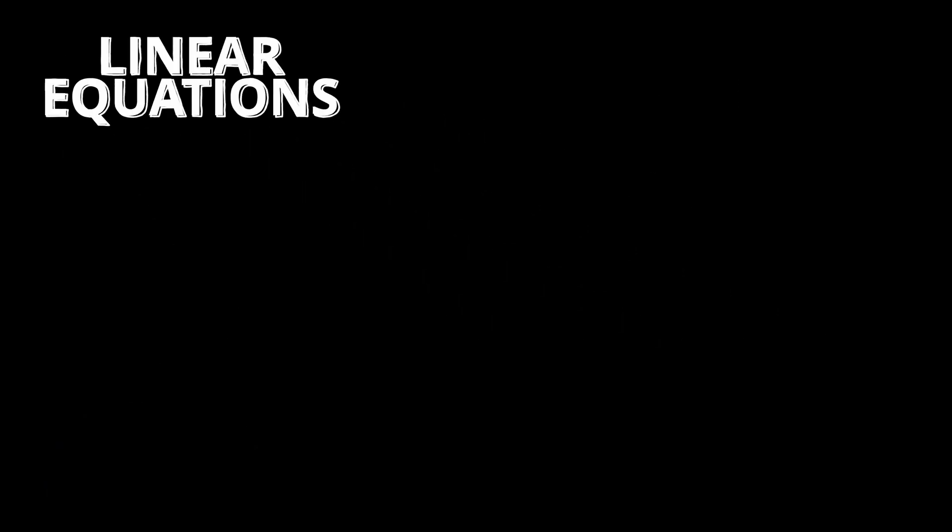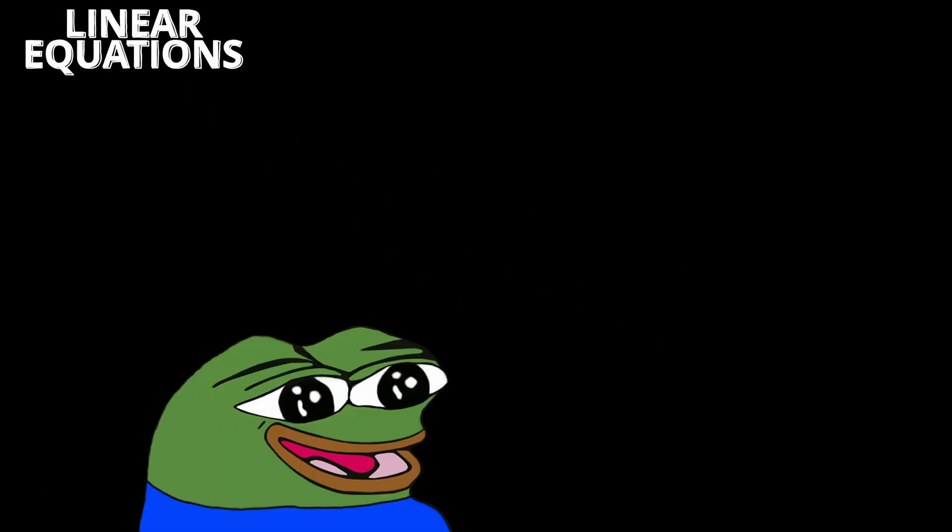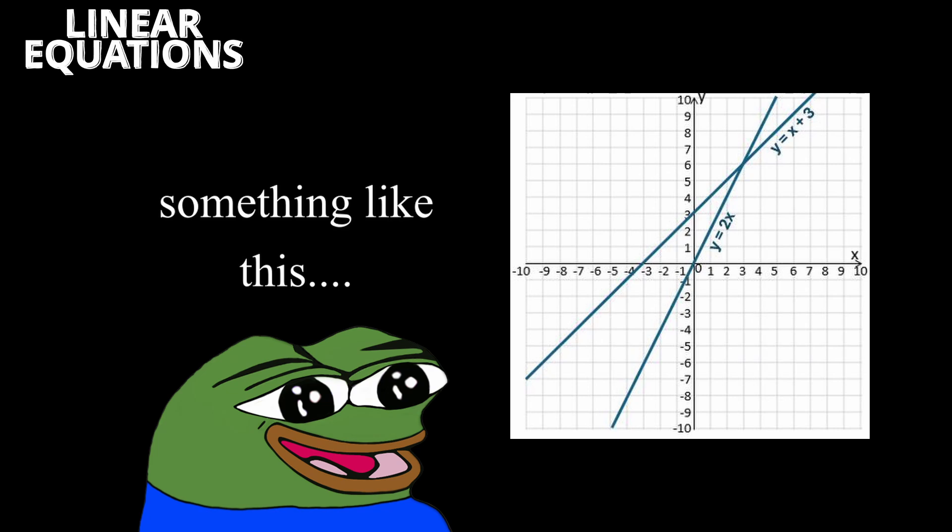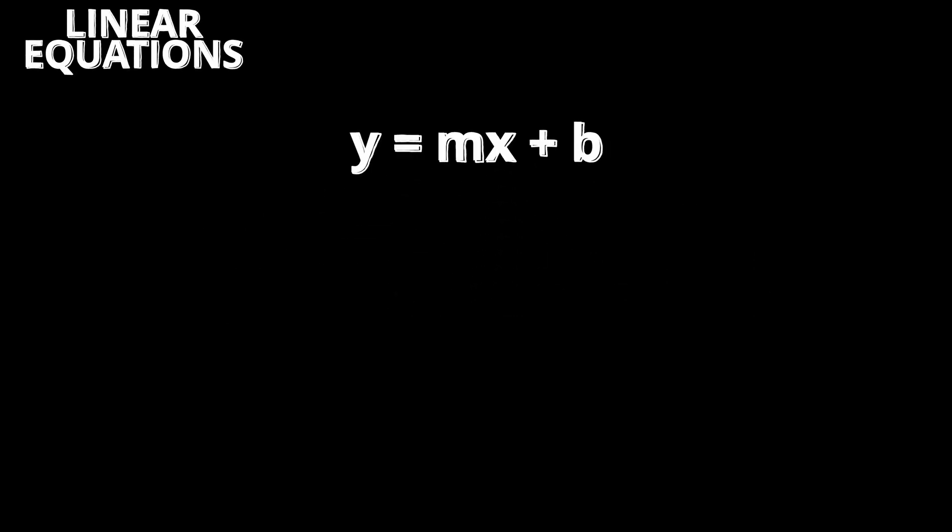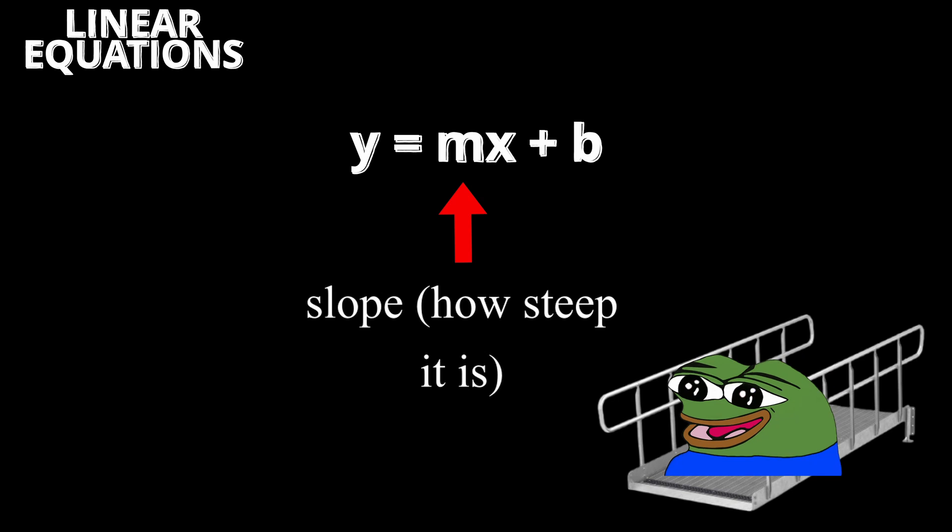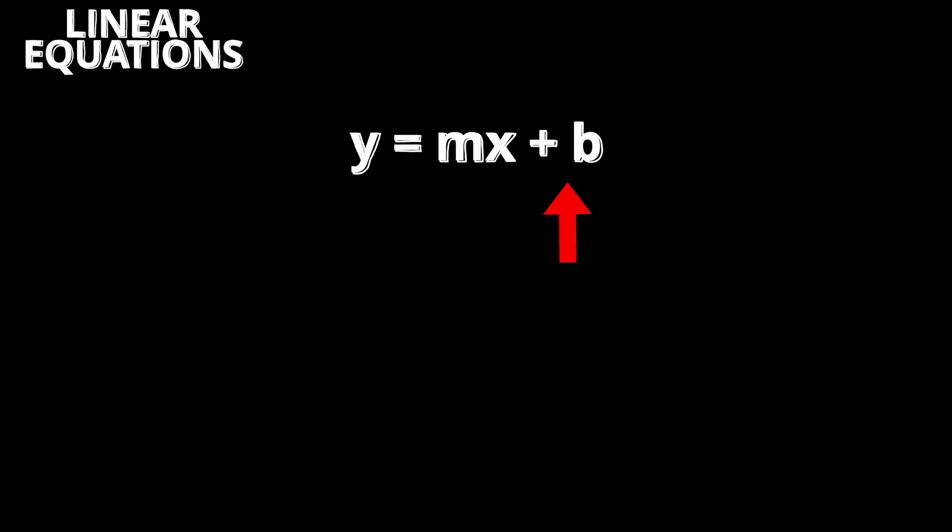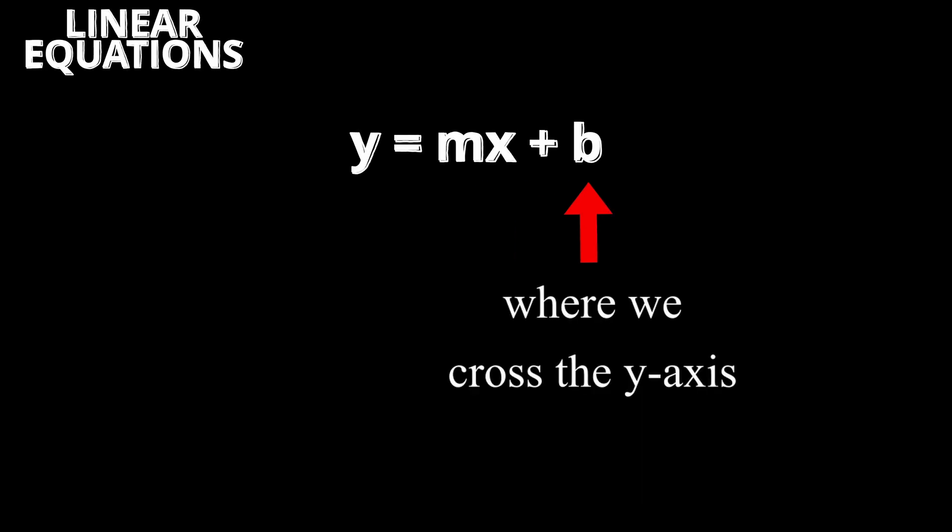Linear Equations. A linear equation is an equation that forms a straight line when graphed. The most common form is y is equal to mx plus b, where m is the slope, or how steep the line is, and b is where the line crosses the y axis.